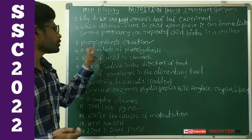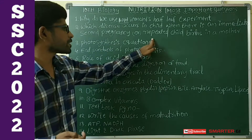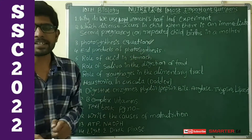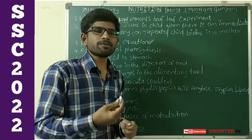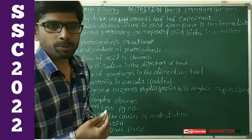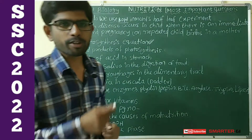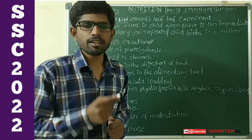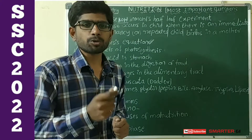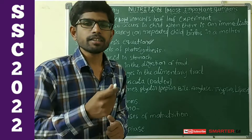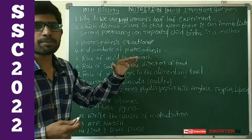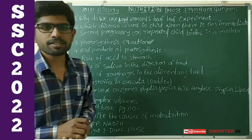Next, see the photosynthesis equation. The photosynthesis equation is: 6CO₂ + 12H₂O, in the presence of sunlight and chlorophyll, gives rise to C₆H₁₂O₆ + 6O₂ + 6H₂O. This equation is also important for short answers.